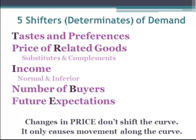Third is income. Income lets us know if a good is normal or inferior. A normal good is one you buy more of when your income goes up, and an inferior good is one you buy more of when your income goes down. Number of buyers also affects the amount of demand. And future expectations of price. If you think the price is going to go up in the future, you're going to buy more of that good today. Just remember, changes in price don't shift the curve. It only causes a movement along the curve.